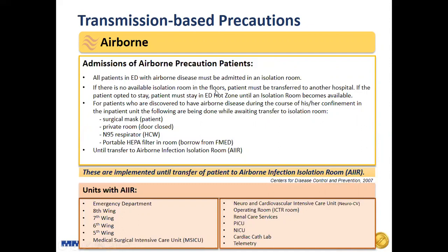For patients discovered to have airborne diseases during the course of confinement in the inpatient unit, the following are done while awaiting transfer to the isolation room: the patient should wear a surgical mask — and due to the COVID-19 pandemic, all patients are required to wear surgical masks. Patients should be placed in a private room with the door always closed. Healthcare workers should wear an N95 respirator in addition to a face shield. A portable HEPA filter should be borrowed from the engineering department. This is the setup until the patient is transferred to an airborne infection isolation room.